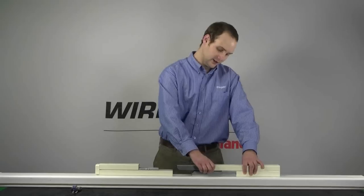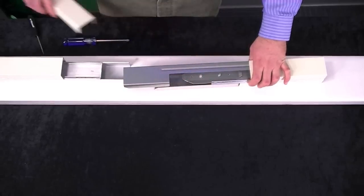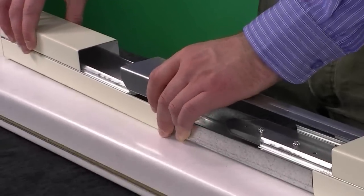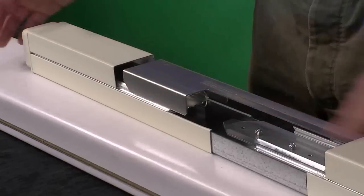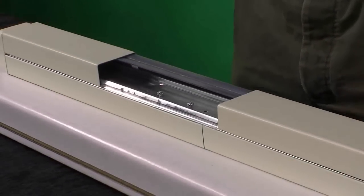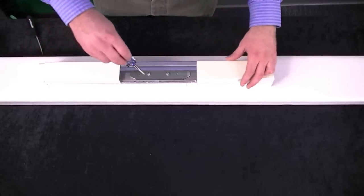We start off by removing this 8-inch cover from our extender section. We then line up our power sleeves, slide the two sections together, and tighten our screw right here.